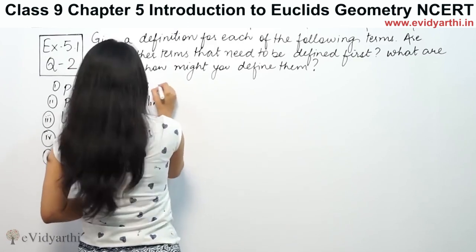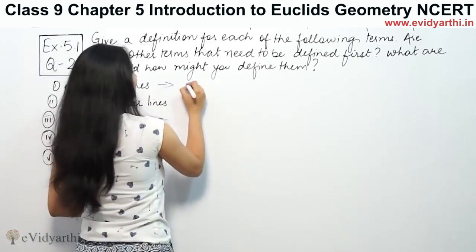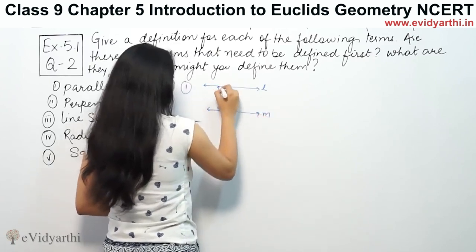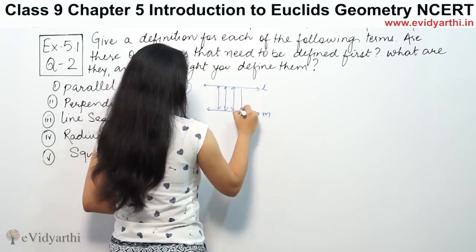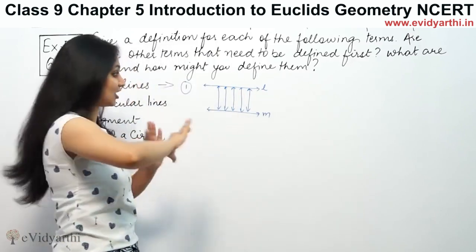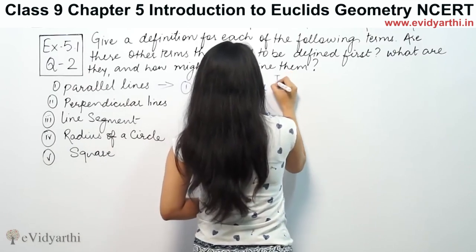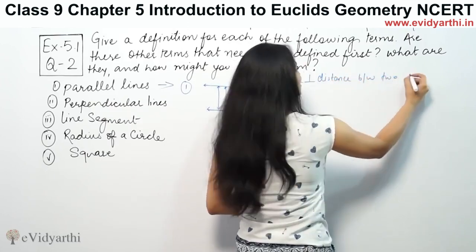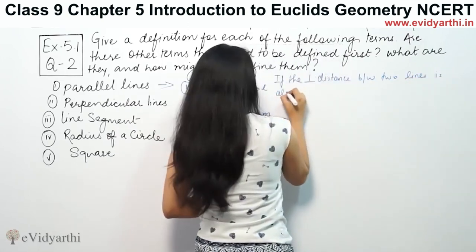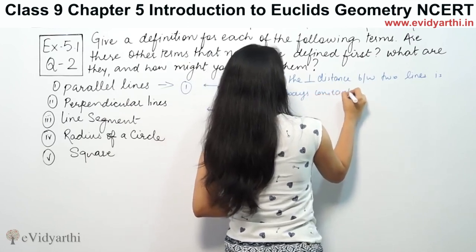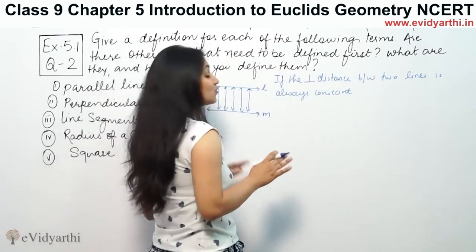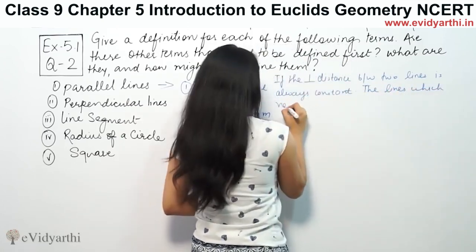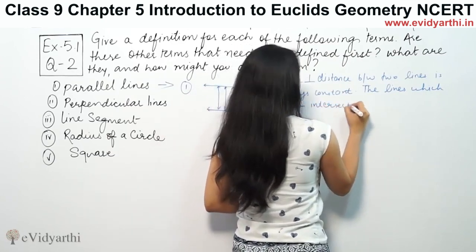The first part we have been given is parallel lines. Parallel lines are like line L and line M. They should consistently have the same distance between them — the perpendicular distance between two parallel lines is always constant. So these are called parallel lines, or lines which never intersect each other.